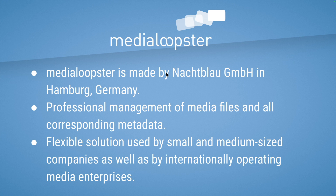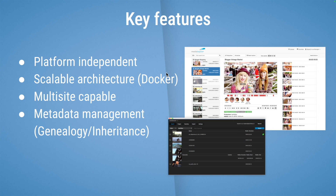The key features include the architecture: Media Loopster is platform independent, based on Docker microservices. The core system runs on Linux. Most clients use Media Loopster on-premise, and because of the architecture and scalability you can use it from a small company up to multi-site scenarios where you work with one Media Loopster system across several locations, with all your content, storage, and metadata managed by one system.